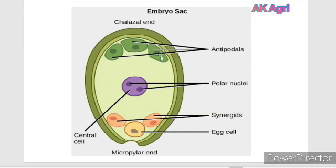This is the structure of the embryo sac. Towards the chalazal end, there are three antipodal cells, and at the center there are two polar nuclei. Towards the micropylar end, there are two synergids and one egg cell.